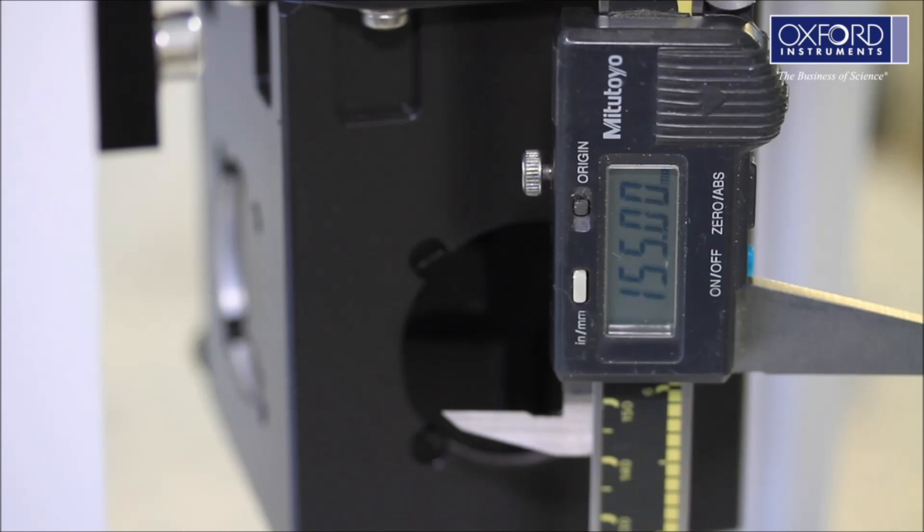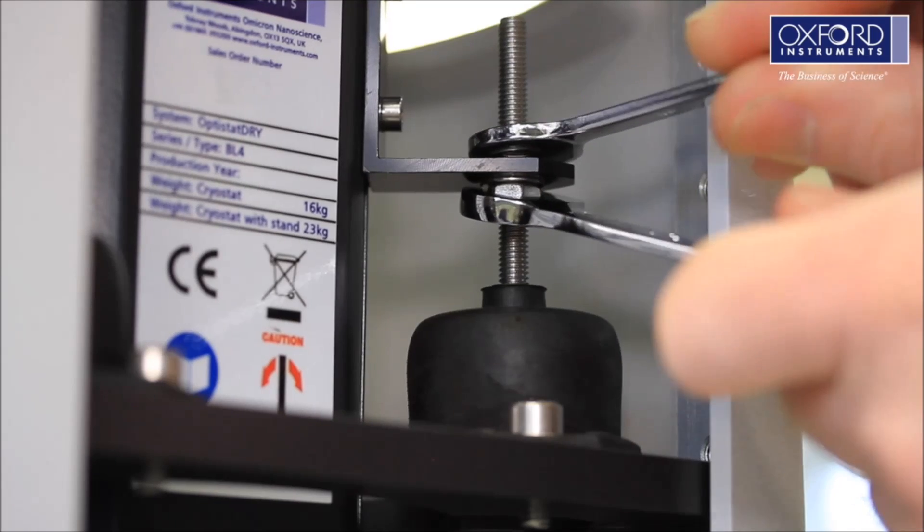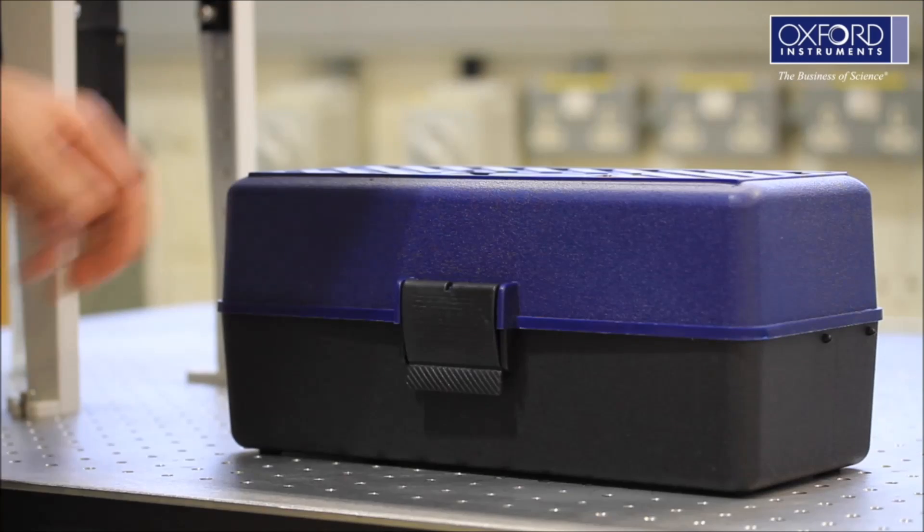When you are happy with the cryostat height, tighten the M6 bolts using the spanners from the optional spares kit.